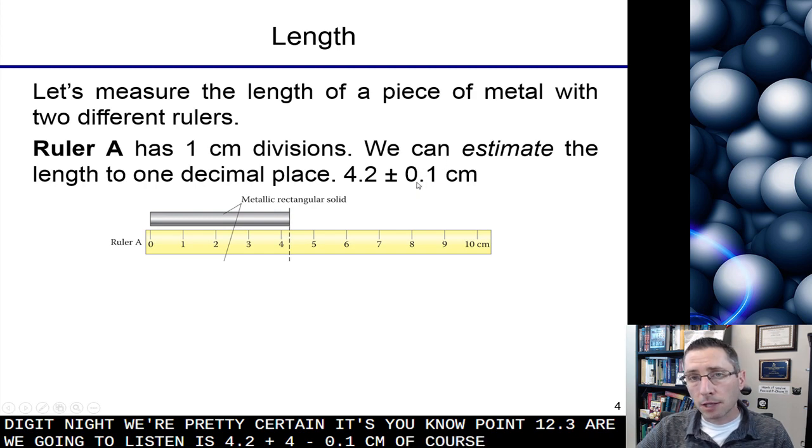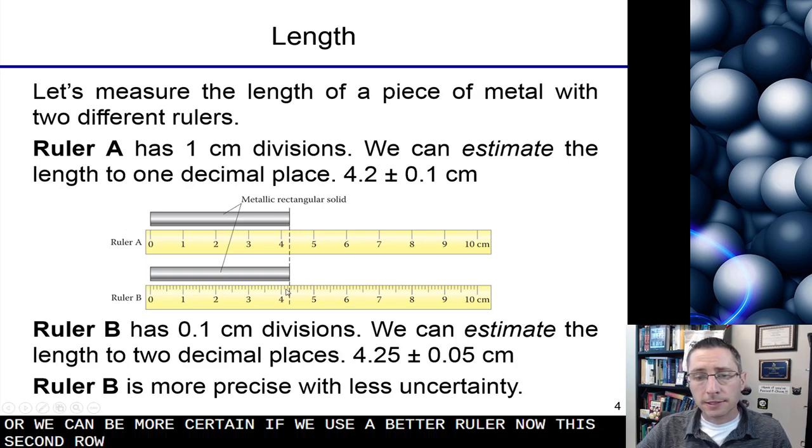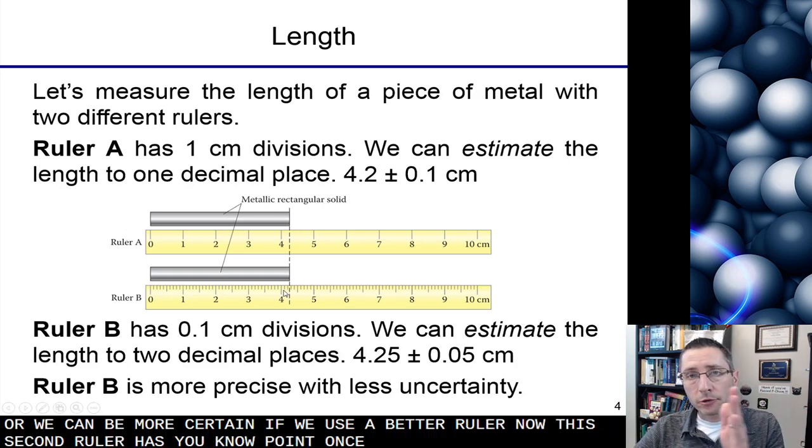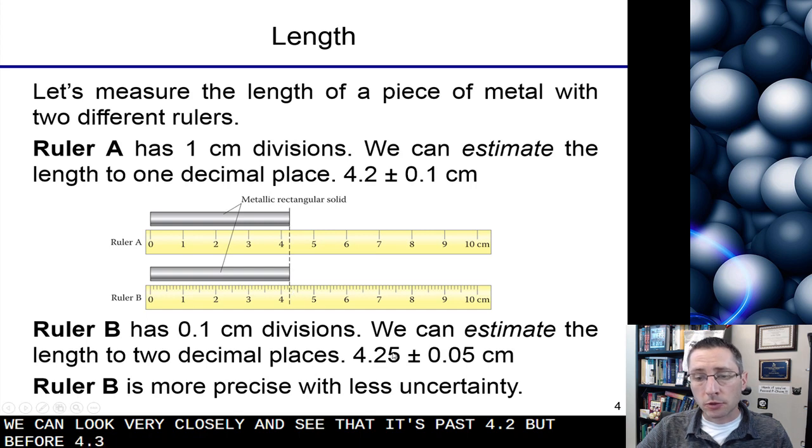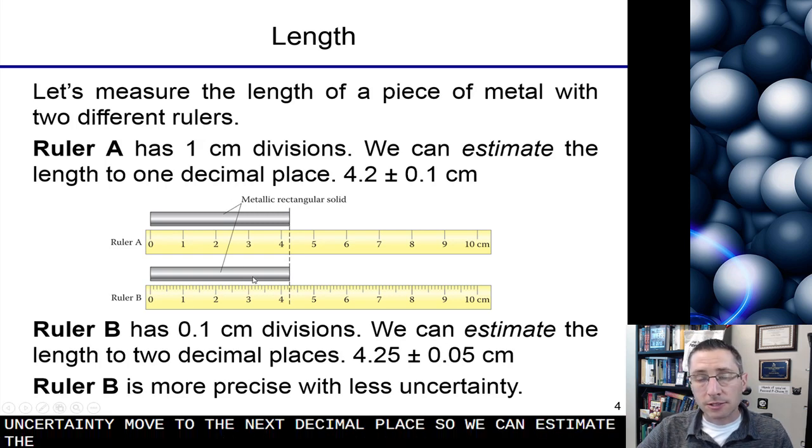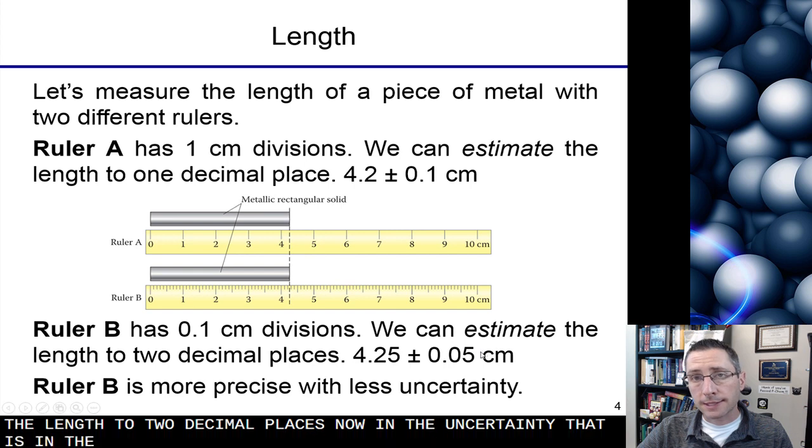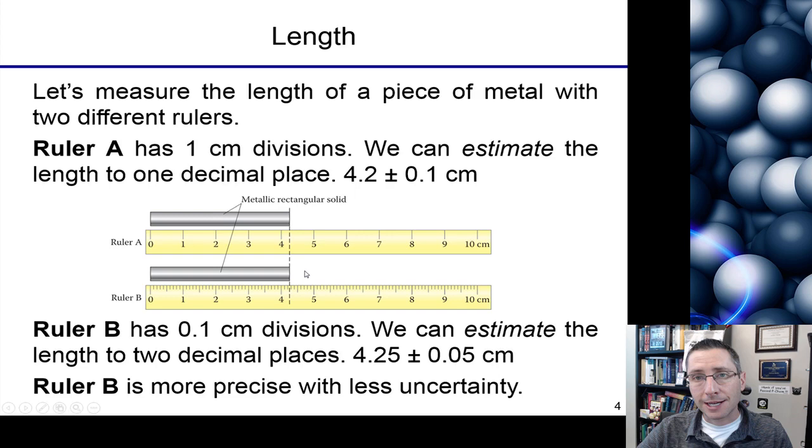The uncertainty, of course, can be lower, or we can be more certain if we use a better ruler. Now this second ruler has 0.1 centimeter divisions, so we can look very closely and see that it's past 4.2, but before 4.3. So now we're certain in that 0.2 value, and the uncertainty moves to the next decimal place. So we can estimate the length to two decimal places now, and the uncertainty then is in this second decimal place. So I'd call this 4.25, that's my guesstimate, plus or minus 0.05 centimeters. So ruler B is more precise with less uncertainty.